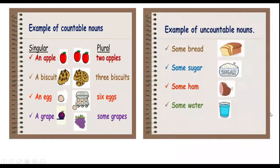Examples of uncountable nouns: some bread, some sugar, some ham, some water.